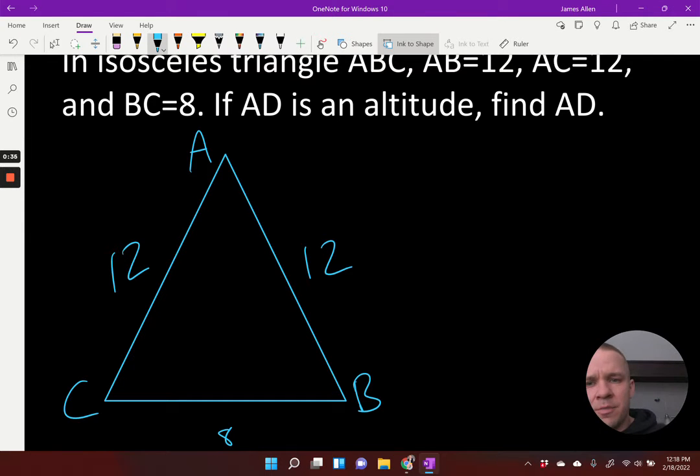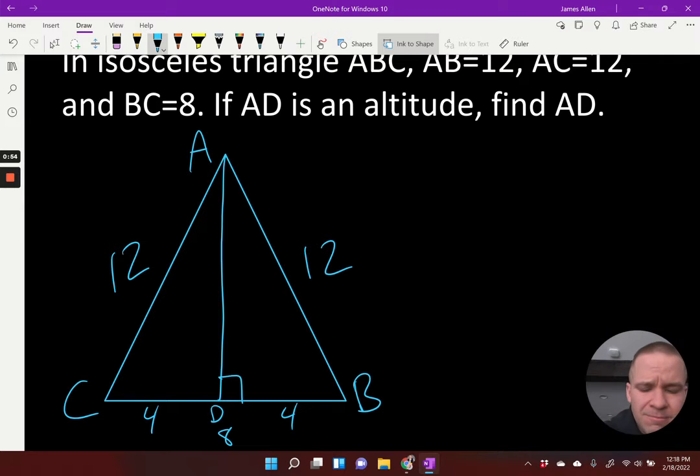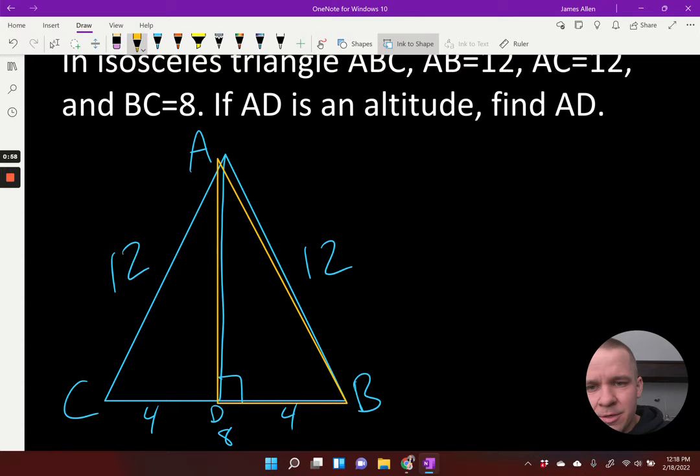It says AD is an altitude, so perhaps I need to draw in an altitude. What do we know about an altitude? An altitude is going to be perpendicular to that base right there. Now, not only is it perpendicular to it in an isosceles triangle, it is also going to be a median, which would bisect it into 4 and 4. So perhaps right now, I've got two sides of a little right triangle action going on right here, don't I?